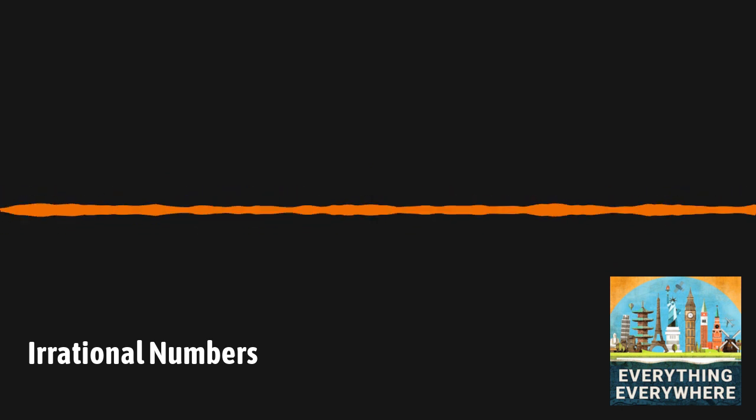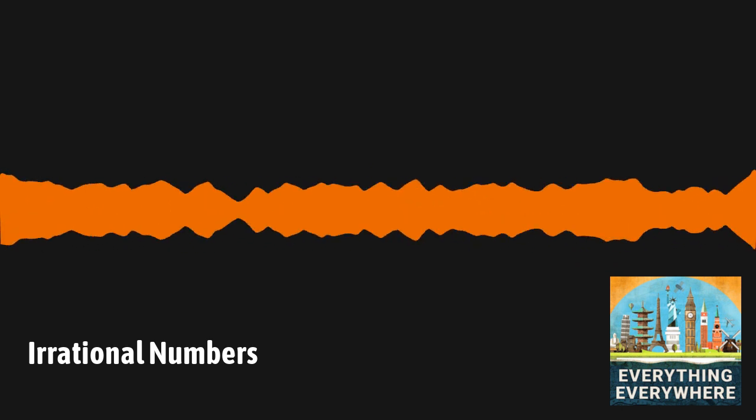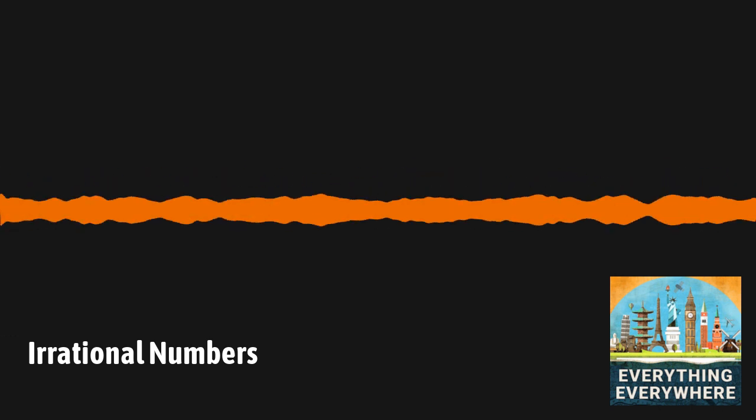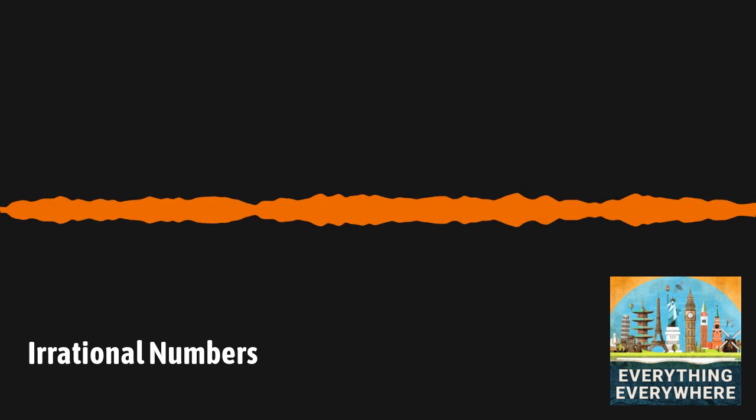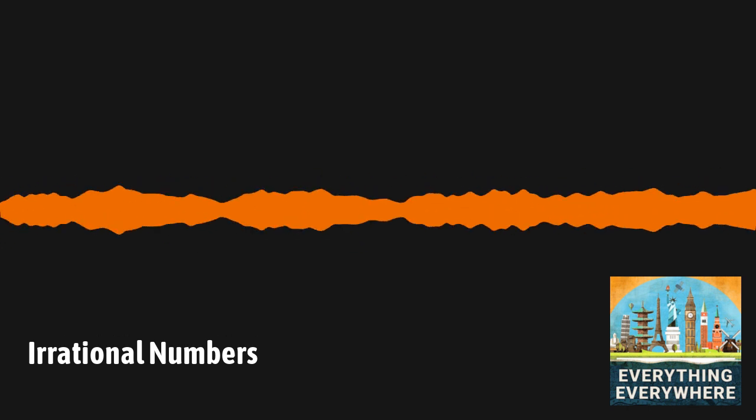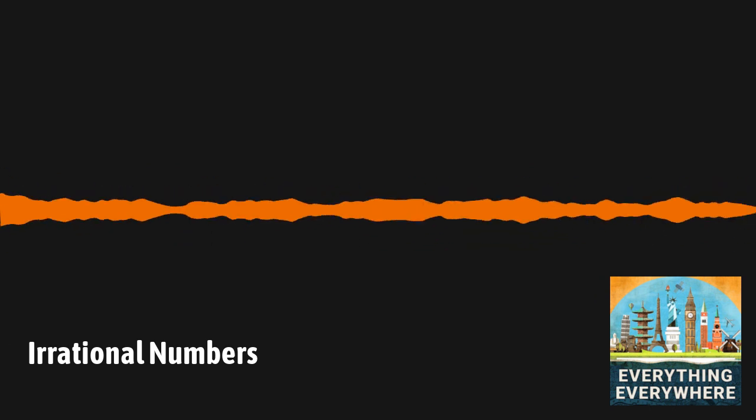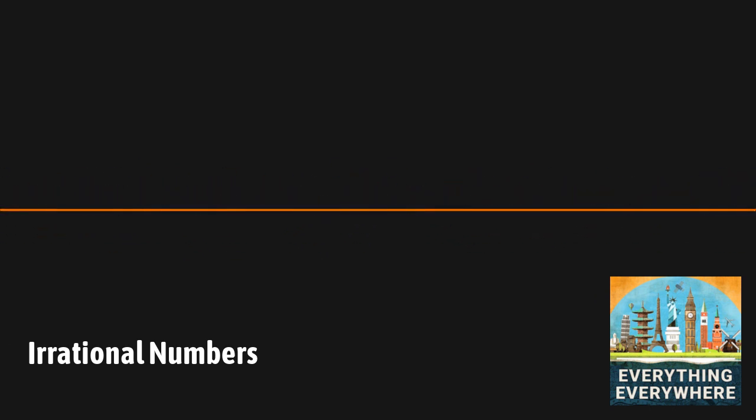While there are an infinite number of irrational numbers, there are a few that are noteworthy. The first is the previously mentioned square root of 2. If you have a square with each side having a length of 1, then the diagonal of the square will be the square root of 2. The square root of 2 has an approximate value of 1.4142135, etc.